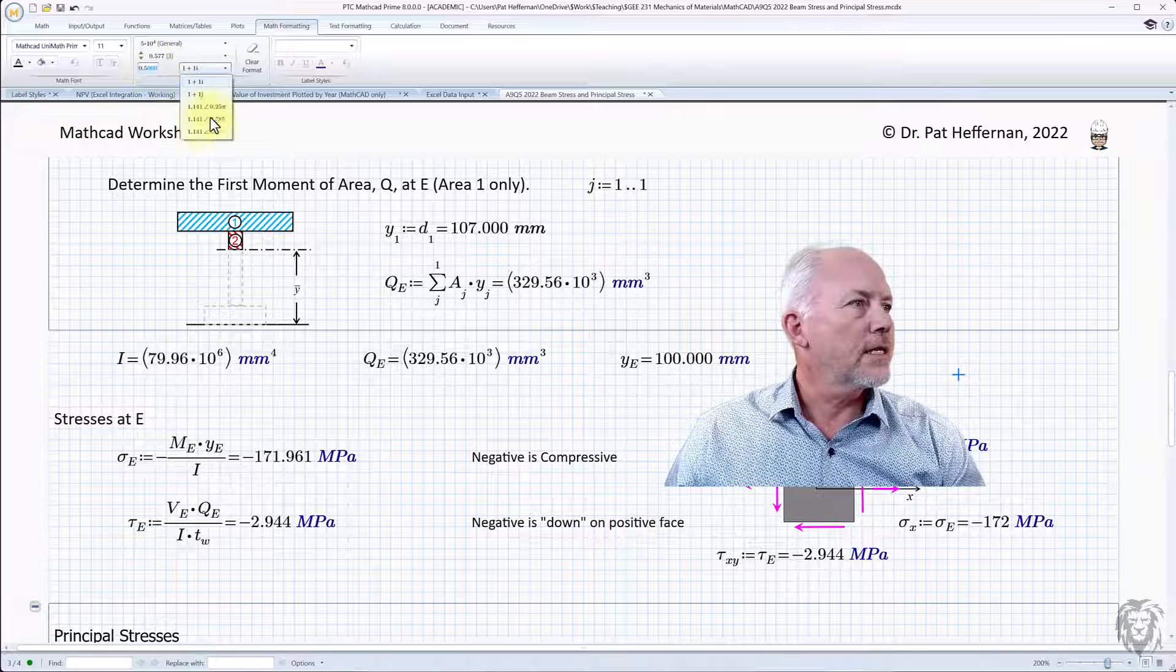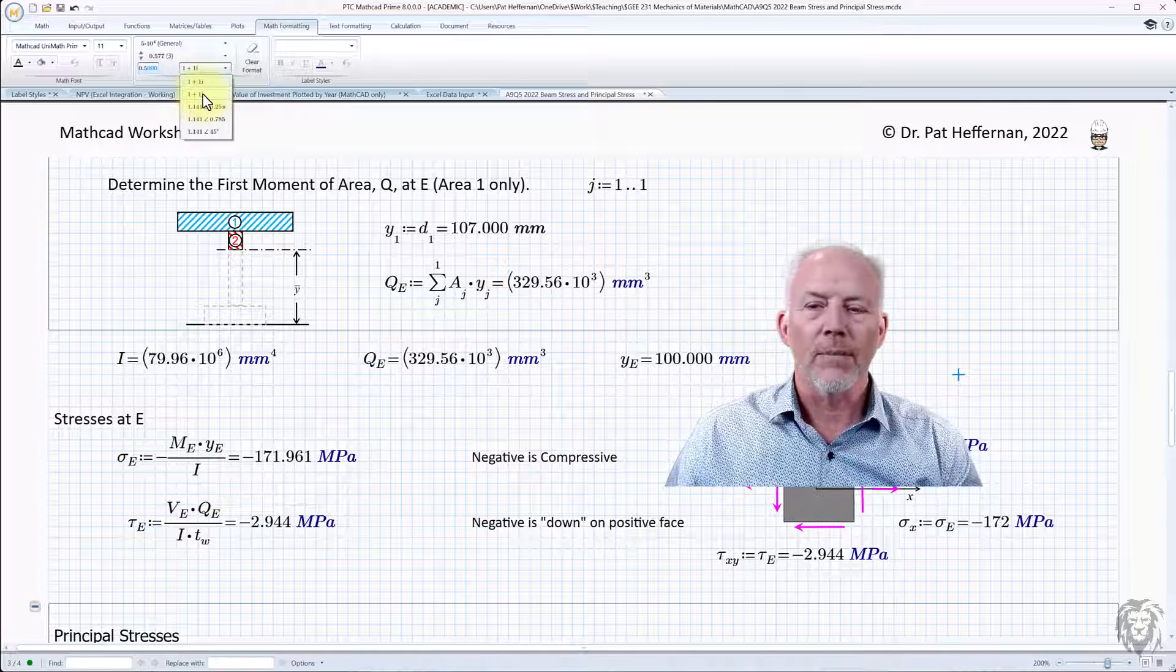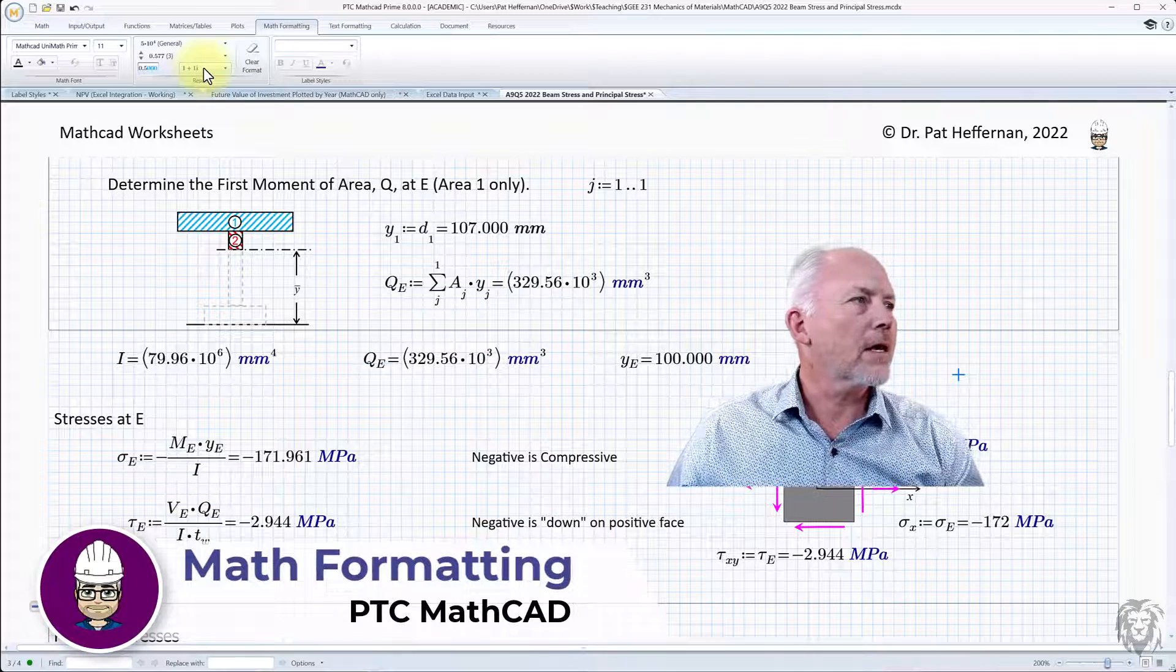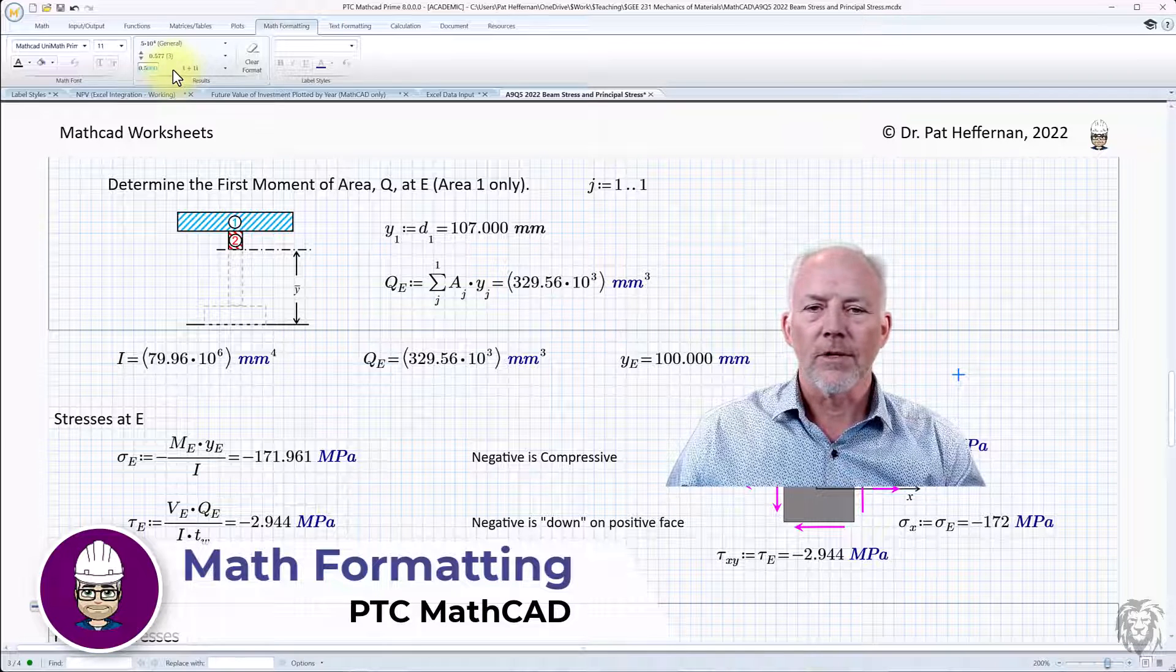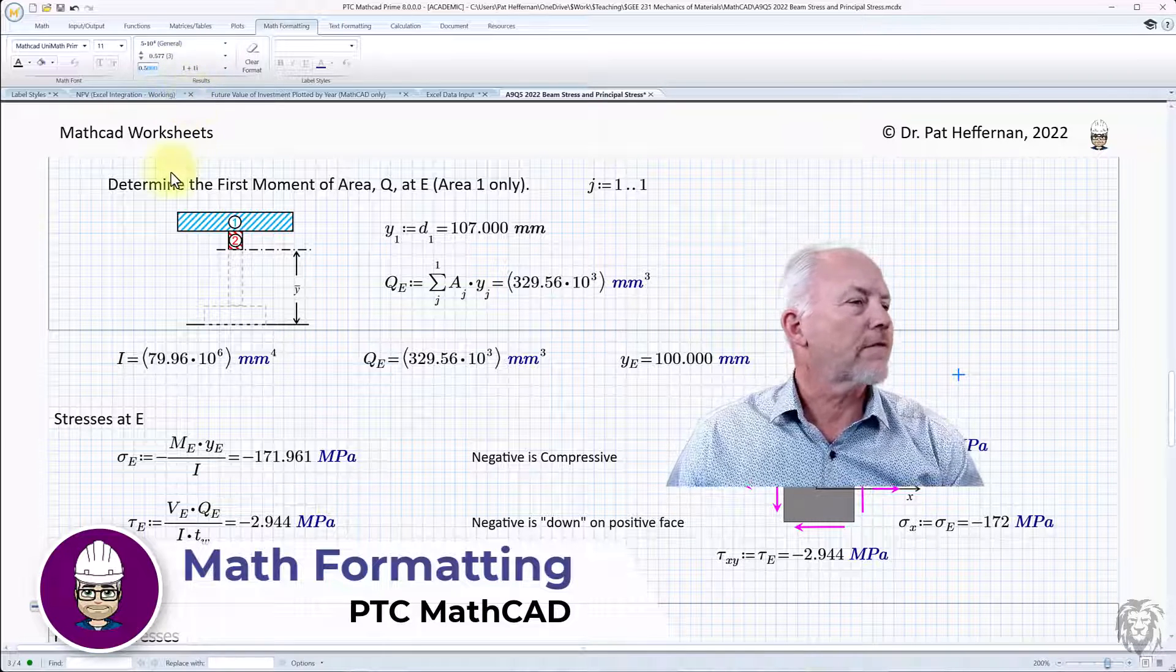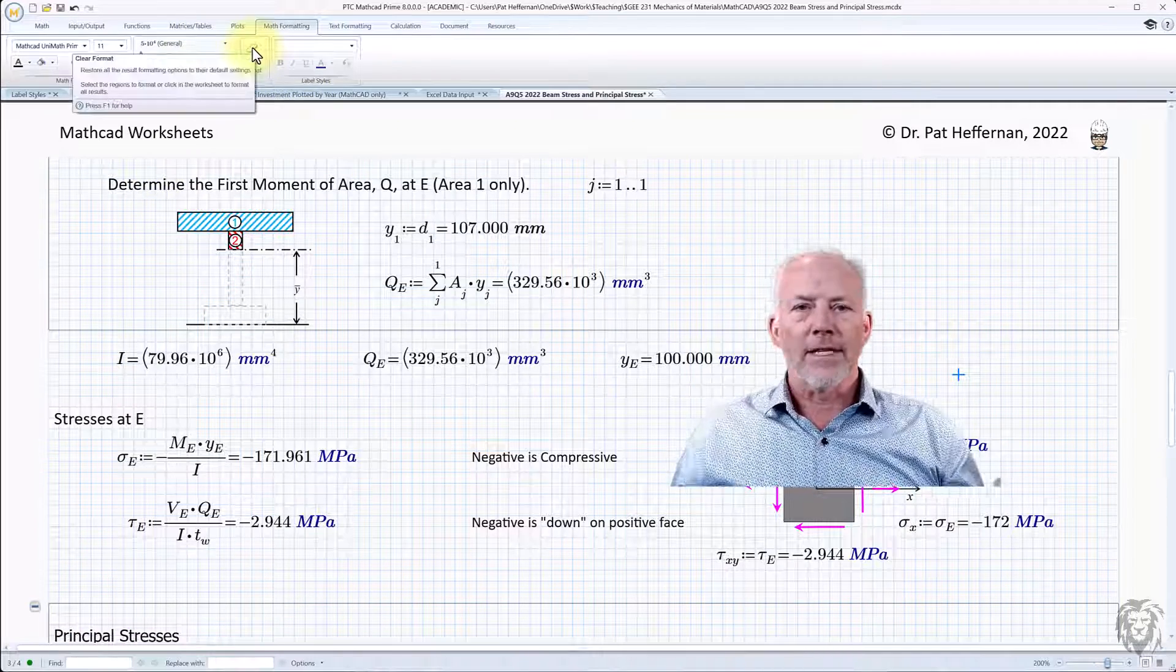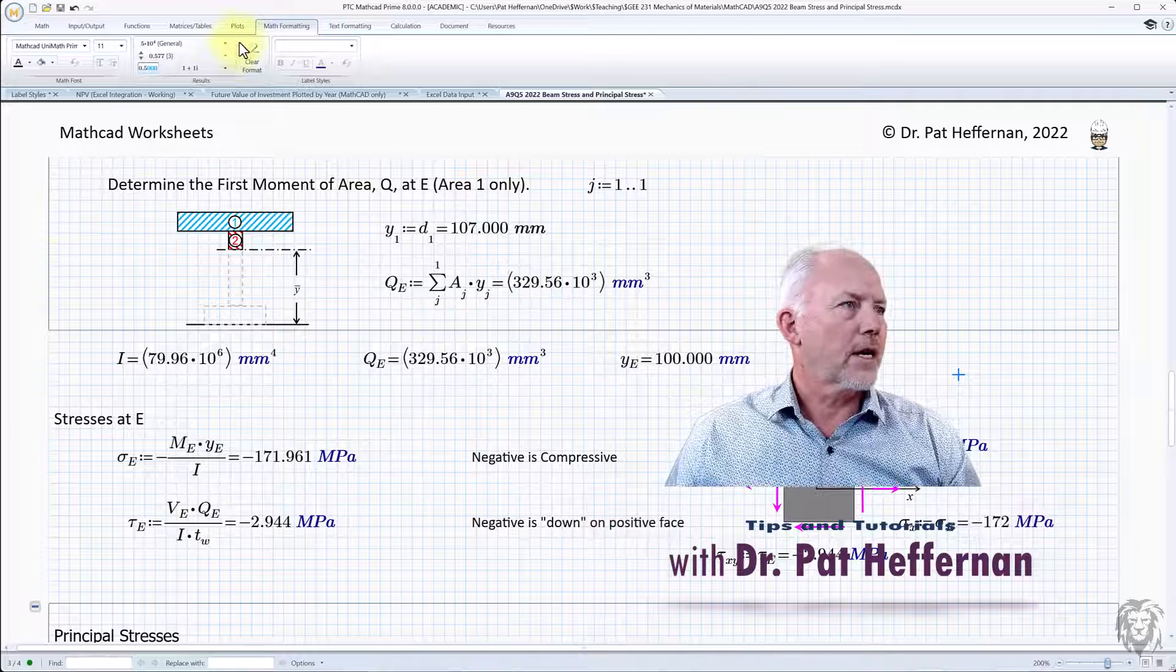Now, as we go down, we get into the complex numbers and how they're shown, whether by components or by polar notation. I don't deal a lot with complex numbers in my field, so I'm not really going to get into it too much. I think it's fairly self-explanatory from what I've seen. And of course, you can clear formatting, just brings everything back to the defaults. So, if you start getting lost in what you're doing, it's not a bad thing to do.